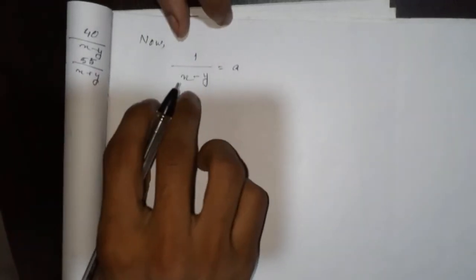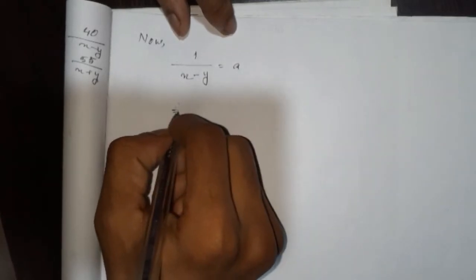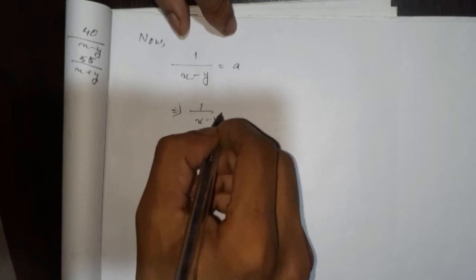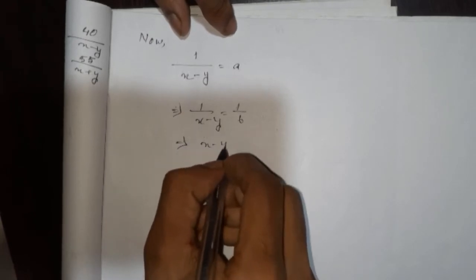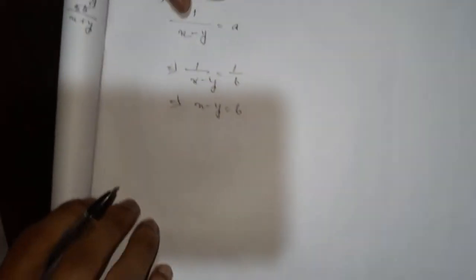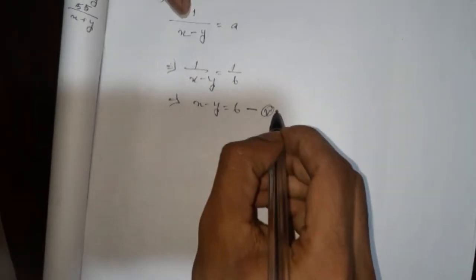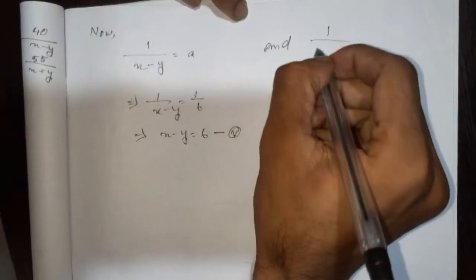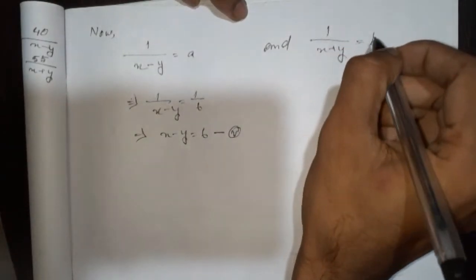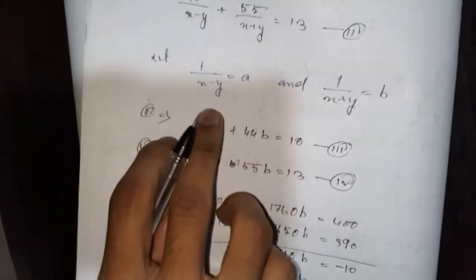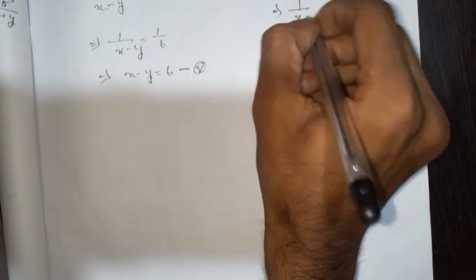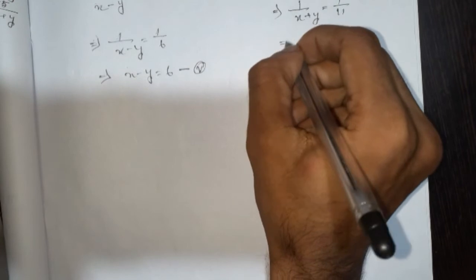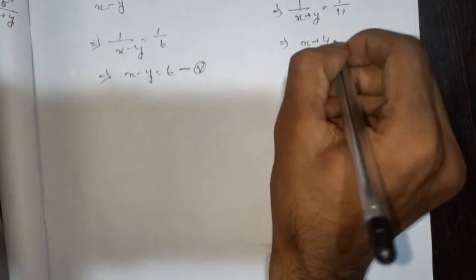So one by x minus y equals a. You have to call 1 by x minus y equals 1 by 6. So you have to do: 1 by x minus y equals 6. Then 1 by x plus y equals 1 by 11. So you can do 1 by x plus y equals 1 by 11.